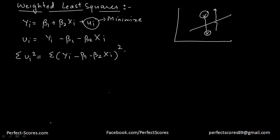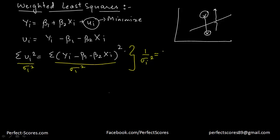Now, what do we do differently in generalized least squares? In GLS, we divide the whole equation by a variance expression. We divide by the square of that expression so that the units match up. We let one over that squared number equal wi, so this introduces the weights.